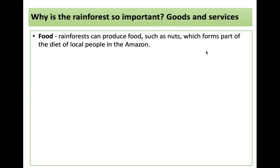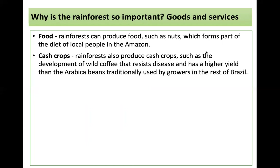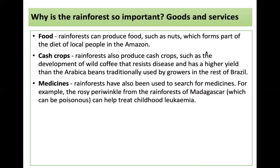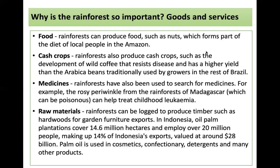There are lots of goods and services that the rainforest provides. Food: nuts form part of the diet of local people in the Amazon, and Brazil nuts form part of our diet too. Cash crops include the development of wild coffee that resists disease and has a higher yield than the Arabica beans traditionally used by growers. Medicines: the rainforest has been searched for many years for medicines — for example, the periwinkle helps treat childhood leukaemia. Raw materials: timber can be logged to produce hardwoods for garden furniture. In Indonesia, oil palm plantations cover 14.6 million hectares and employ over 20 million people, making up 14% of Indonesia's exports valued at around 28 billion US dollars — used in cosmetics, confectionery, detergents and lots of other products.